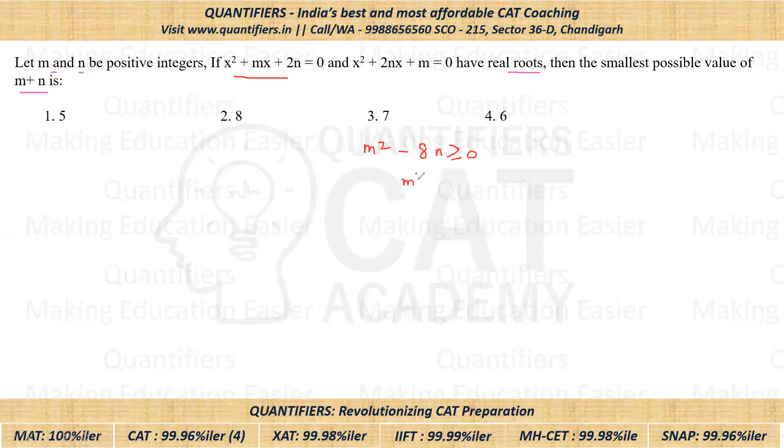So from here, I can say that M² should be greater than or equal to 8 times N. This is the first relation which we have.